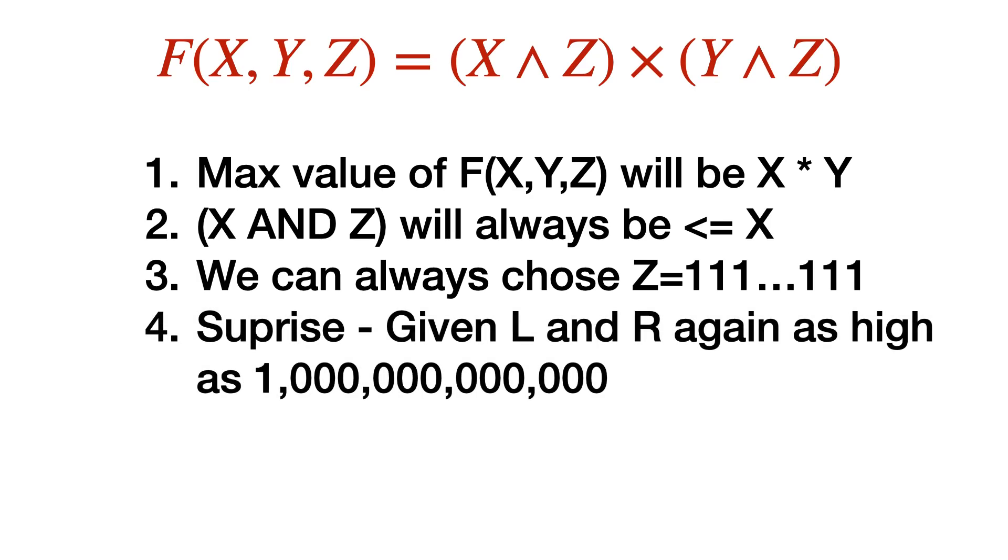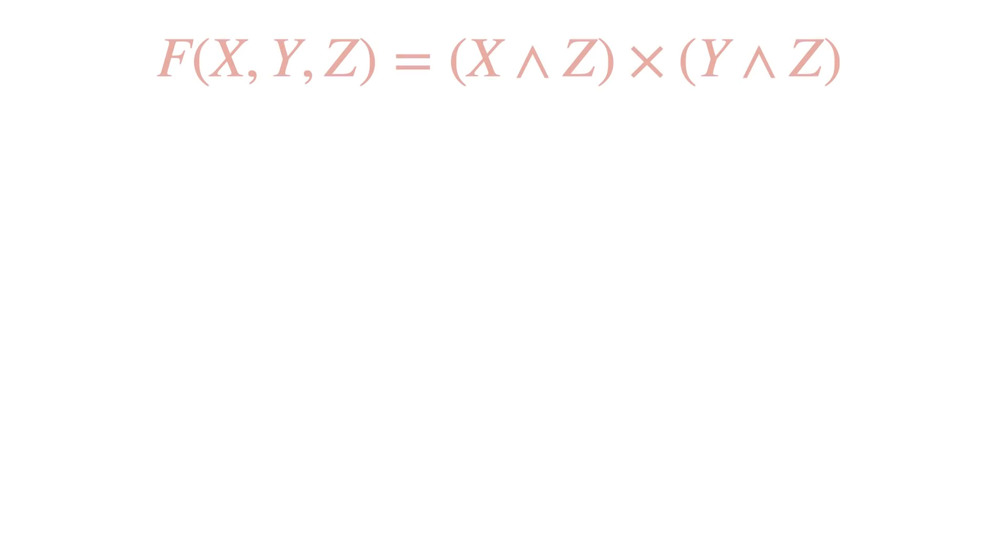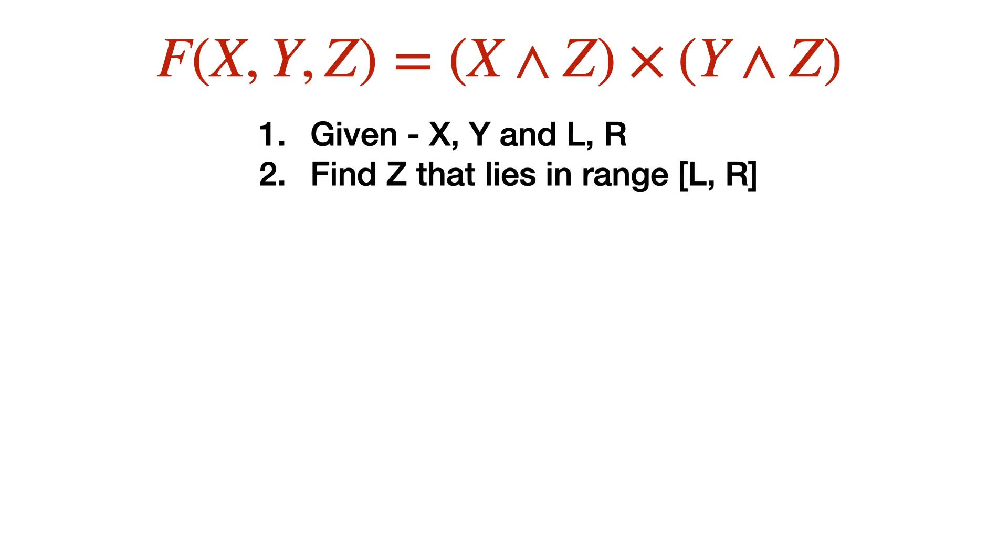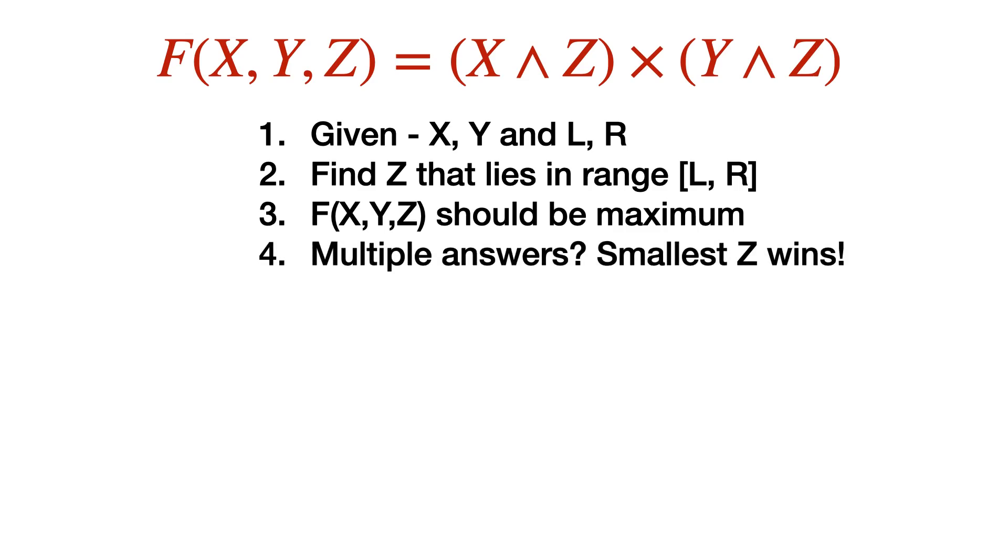Then what is the problem? There is a surprise. We are also given two integers L and R which can again be as high as a trillion, and now Z has to follow the constraint that it should lie in the range L to R. This makes it really difficult because we have to iterate on a trillion range. Not only that, we have to do this for 10 to the power 5 test cases.